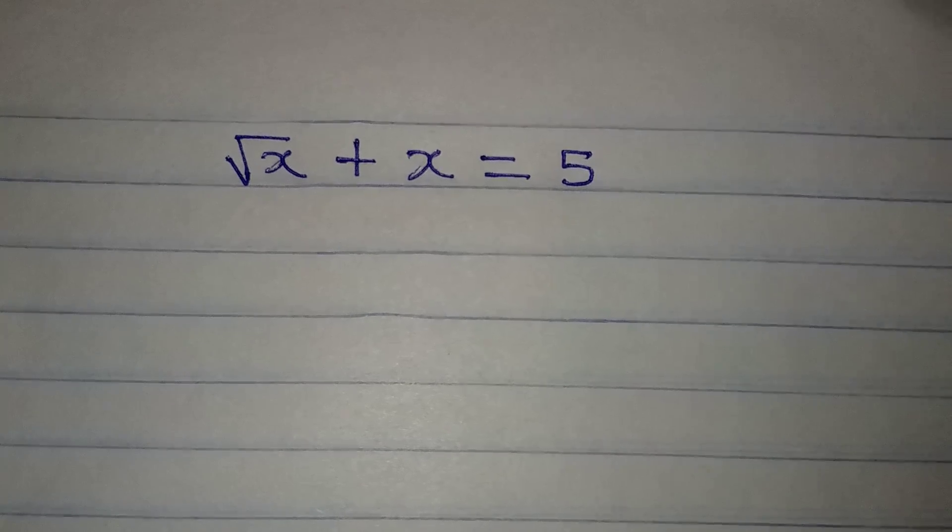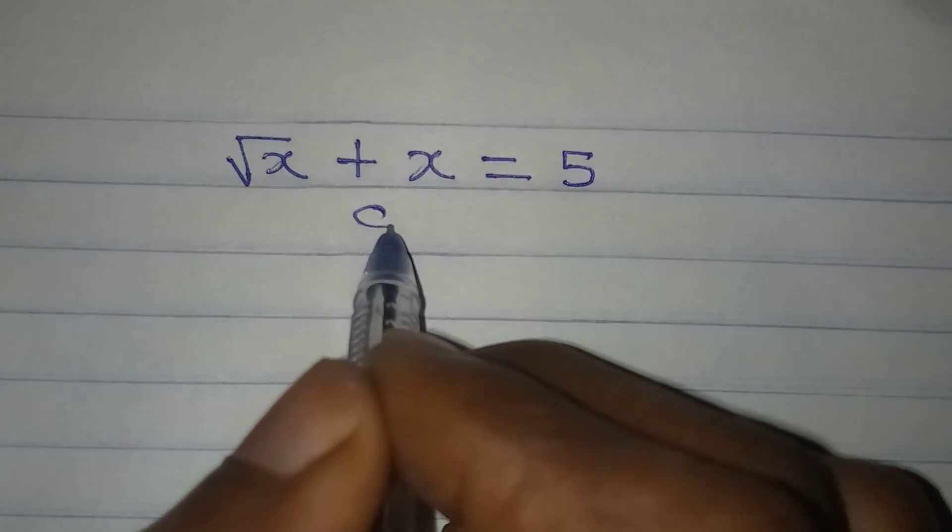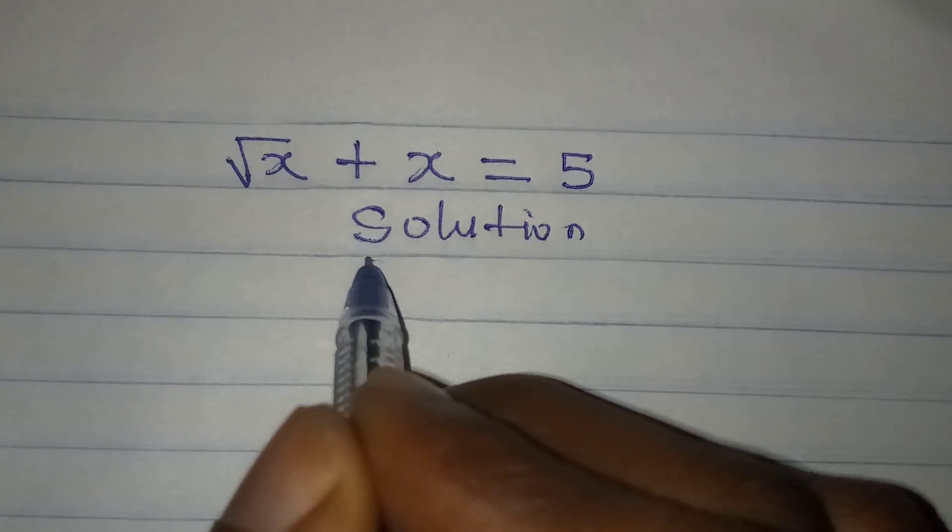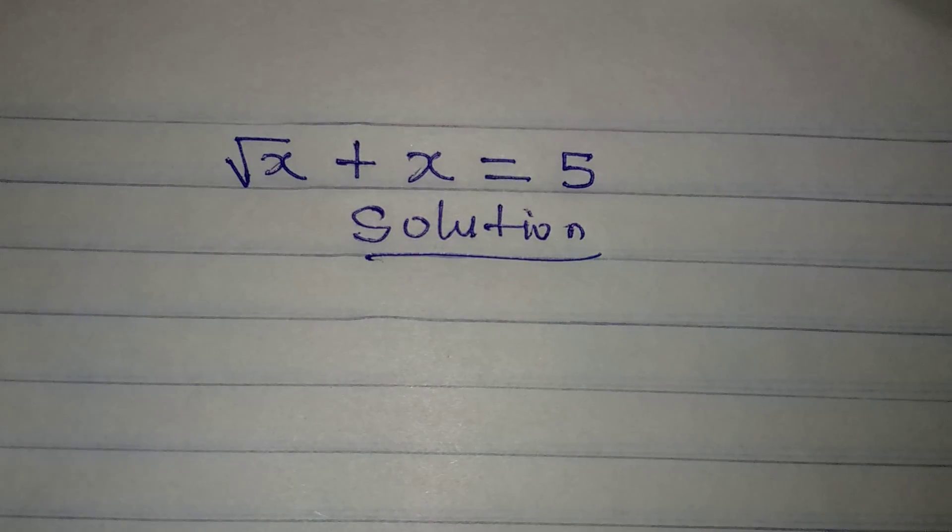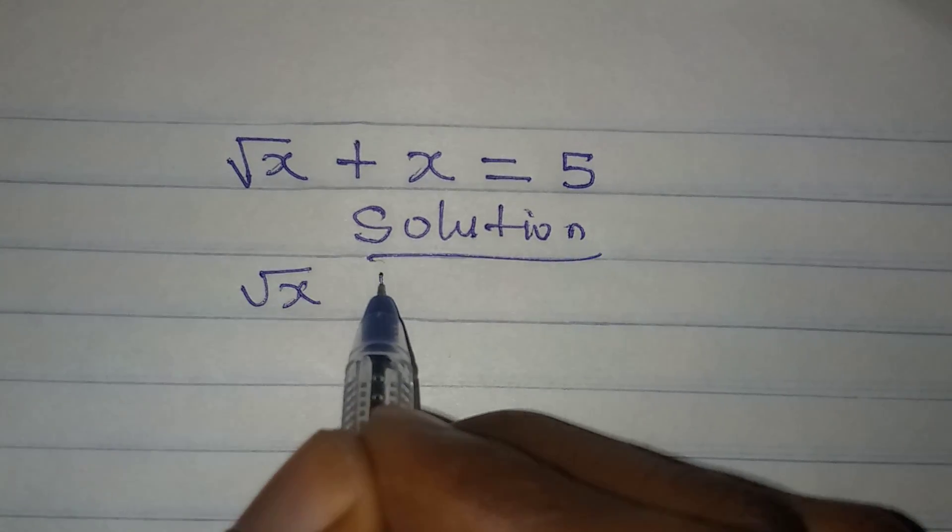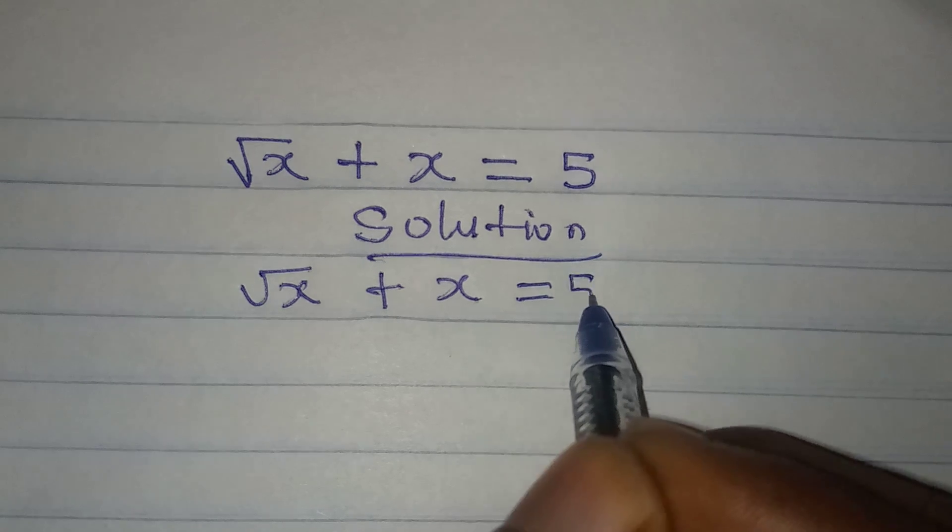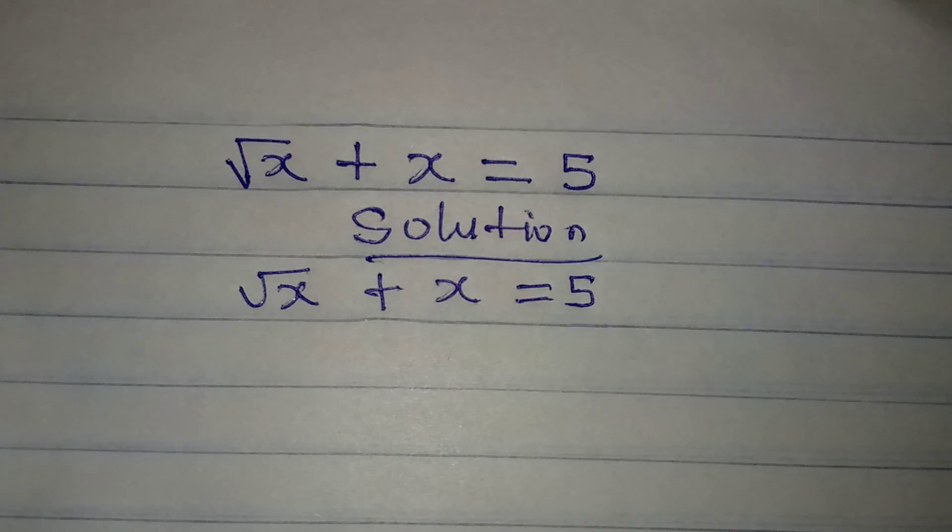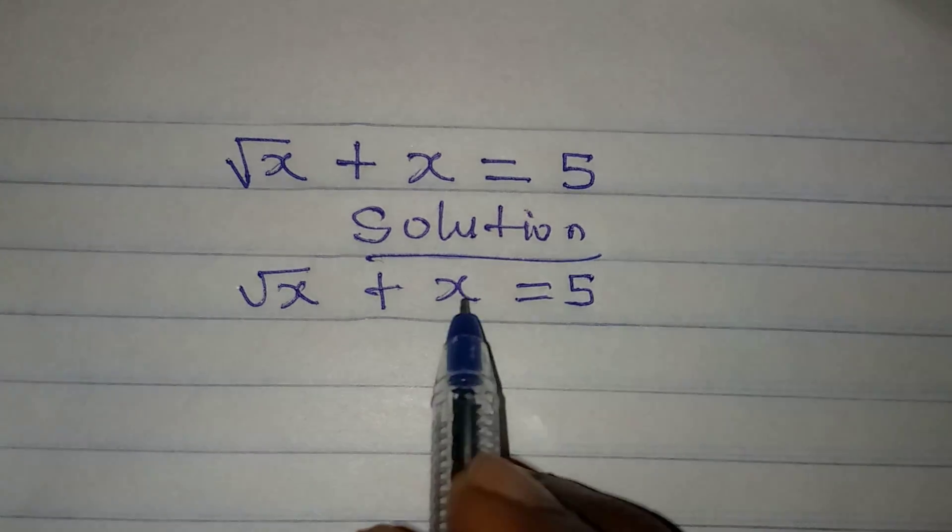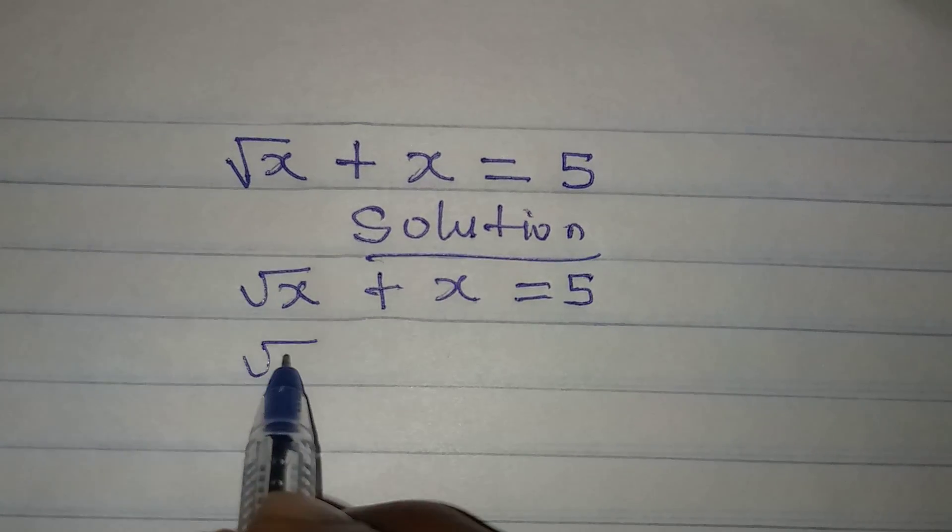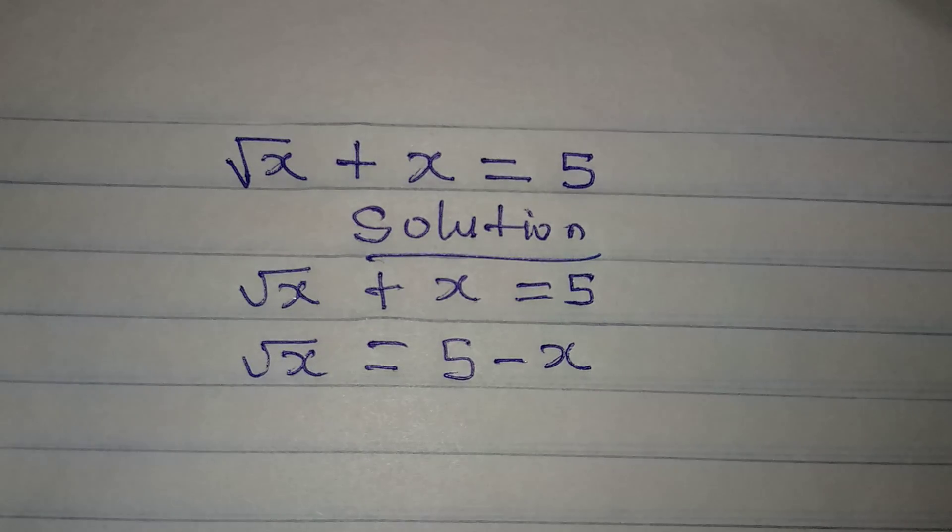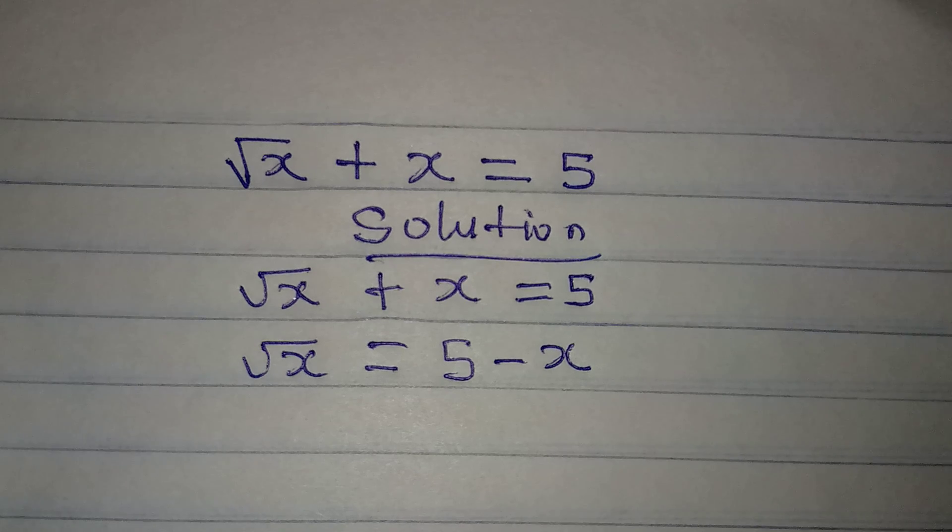Hello everyone, let's solve this problem completely. I mean that we should bring out all the solutions. So what should we do first? Take x to the other side so we have square root of x equal to 5 minus x. What will be the next step?